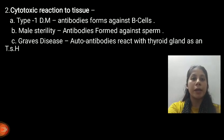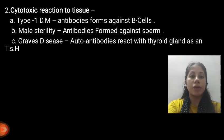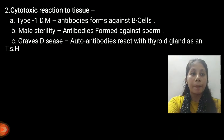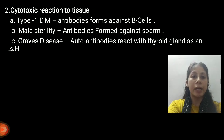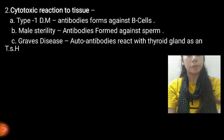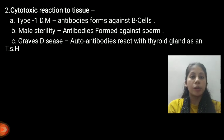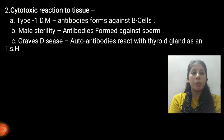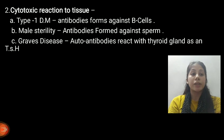Cytotoxic reactions to tissues: the first example is Type 1 Diabetes Mellitus, in which antibodies form against the beta cells. Another example is Male Infertility, in which antibodies form against the sperm. Another one is Graves' Disease, in which autoantibodies react with the thyroid gland against TSH.